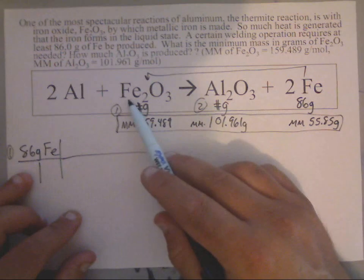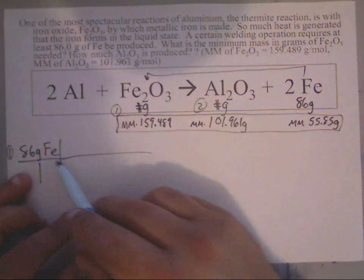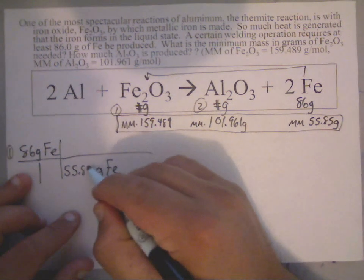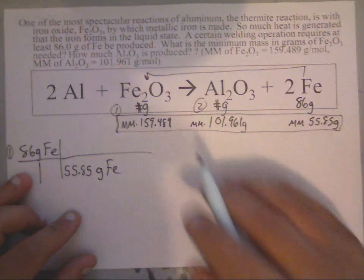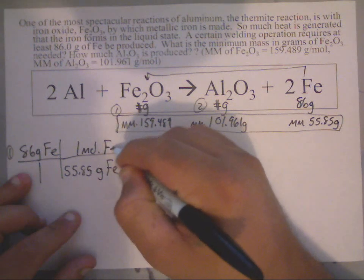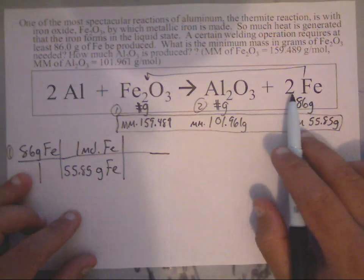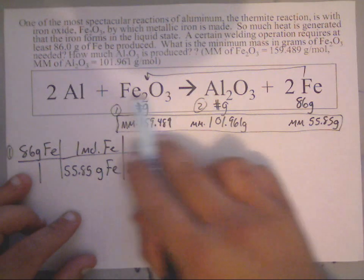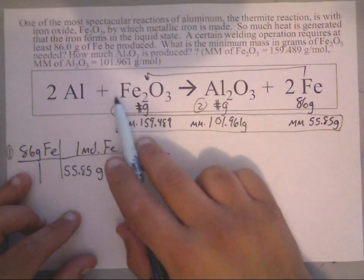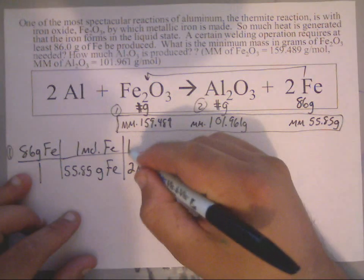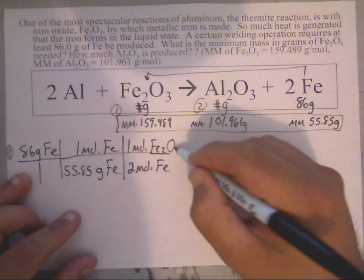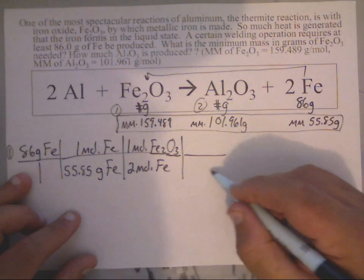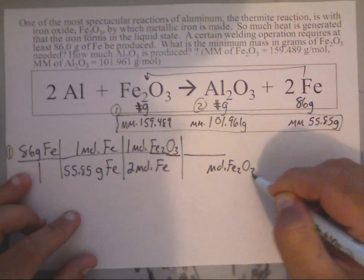Down here I need to know the molar mass of Fe because this has to be grams of Fe. The molar mass of Fe is 55.85, and that means that's one mole of Fe. Looking at the balanced equation, there's two moles of Fe, so here comes two moles Fe. Now I've got to figure out how many moles of Fe2O3 are here.